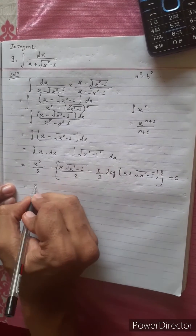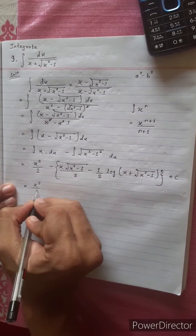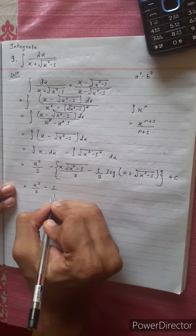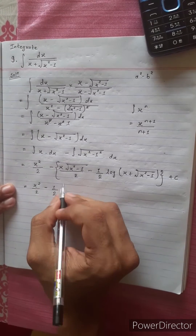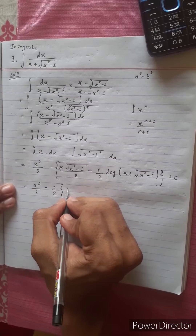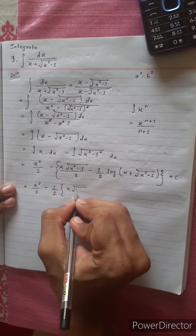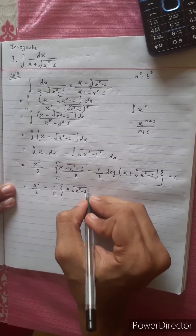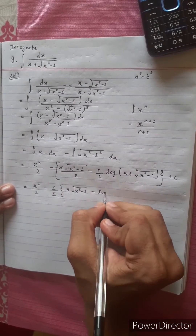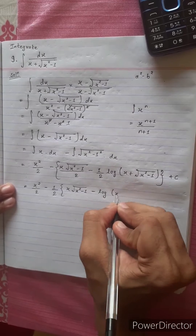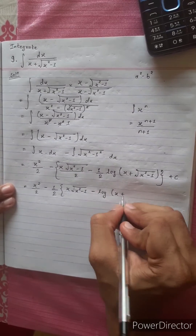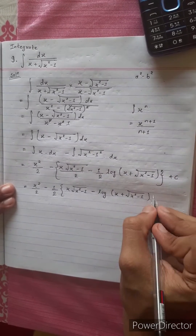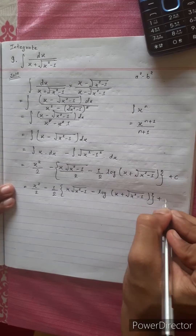This is 1 by 2: x squared by 2 minus 1 by 2 times under root x squared minus 1, minus log of x plus x squared minus 1, plus c.